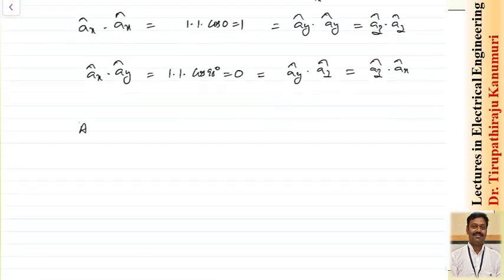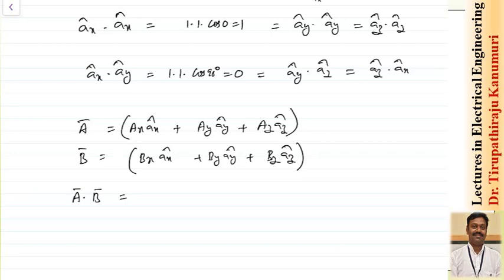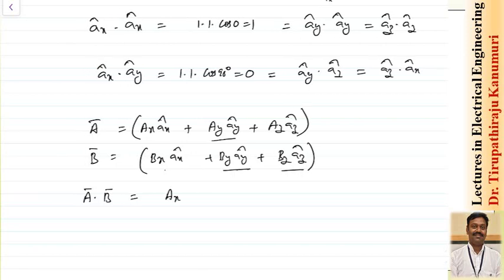Let us take vector A represented as Ax in the x direction, Ay in the y direction, and Az in the z direction. Let another vector B be Bx, By, Bz. For their dot product, we multiply each component: only x times x, y times y, and z times z terms remain — all cross terms become 0. So the result is Ax·Bx + Ay·By + Az·Bz, which is a scalar value.